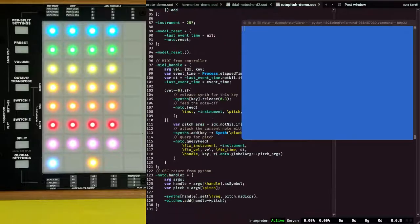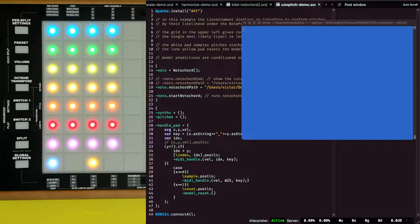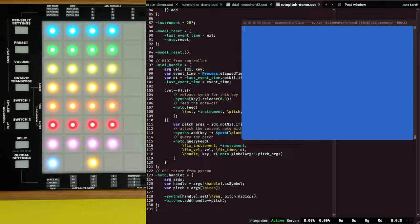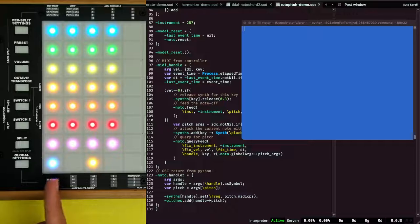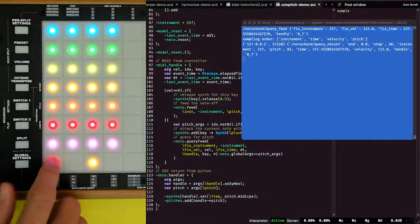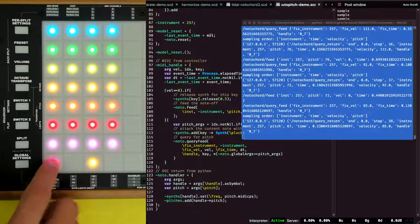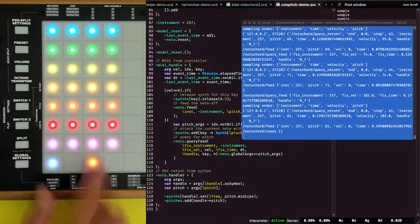Finally, we can do more than just sampling from Notochord. Since it produces whole probability distributions, we can build what we call likelihood-based interfaces. Here we've built one using a Linnstrument control surface. This time we're not using FluidSynth, but doing the synthesis in SuperCollider, so no red terminal. The white pad here at the bottom fills the pitch in by just sampling Notochord given the performed timing and velocity. The yellow pad resets the model.